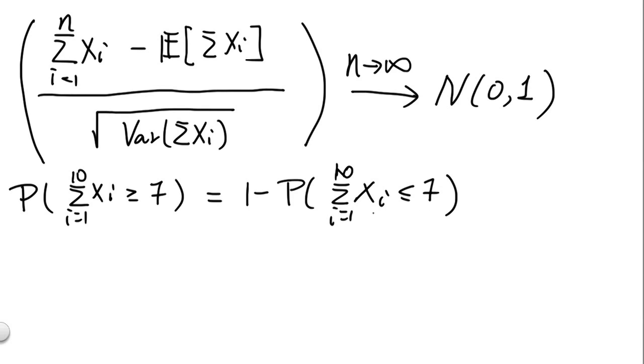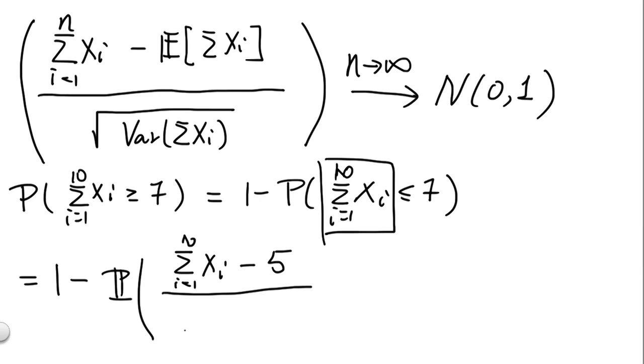We'll rewrite this as 1 minus the probability Σ(i=1 to 10) xi ≤ 7. Now we're going to apply the scaling to the summation. So this is equal to 1 minus the probability (Σxi - 5) / √(10/12) ≤ (7 - 5) / √(10/12), because we know from previous parts that 5 is the expected value of the sum and 10/12 is the variance of the sum of xi's.